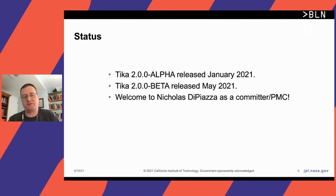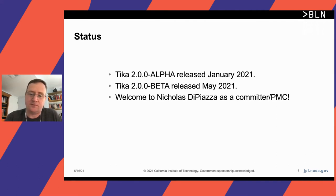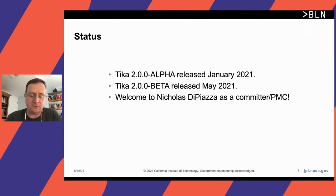So status: we released 2.0.0 alpha in January, beta came out towards the end of May. We were thinking about getting a 2.0 out by the conference, but that didn't happen. Progress is being made, and we want to make sure that everything is working well.